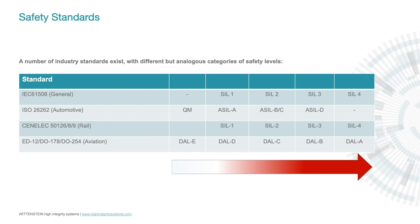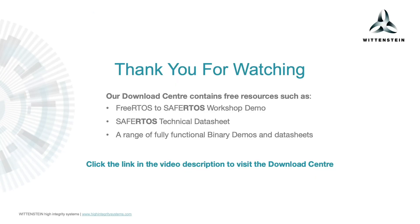The automotive standard has a lower risk category called QM — quality management — which has no analog in the IEC-61508 or CENELEC schemes, although it's broadly similar to the aviation DAL-E level. That's it for this video. Remember, you can always download more resources for free from our free download center.